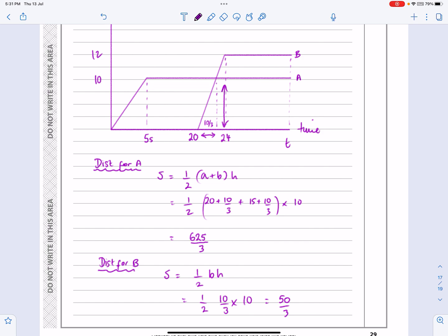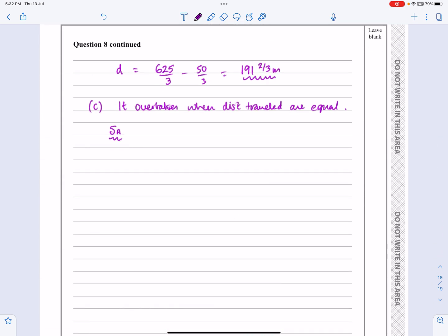So for S_A, the distance travelled, for A, we've got that length is T, that length is T minus 5 and that height there is 10. S_A is going to be half A plus B times H, which is going to be a half T plus T minus 5 times 10, which works out to be 5 lots of 2T minus 5. And 5 lots of 2T minus 5 is going to be 10T minus 25.